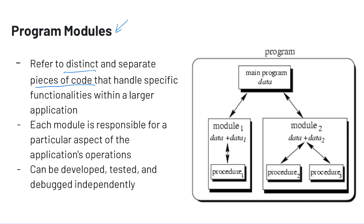For example, writing a program to calculate the average grades of all students in a class. We might want one function or program module that actually calculates the average, one module responsible for getting all the data as input — maybe from an Excel file — and another module responsible for organizing and outputting the results into another Excel file. The idea behind program modules is that each module is responsible for a particular aspect of an application's operations, and we can develop, test, and debug each one independently of the others. This makes software development a lot simpler because, for example, an error in the function that calculates averages won't be caused by code involved in some unrelated functionality. There's less interference between different parts of the program, making it easier to develop and to find errors when something goes wrong.